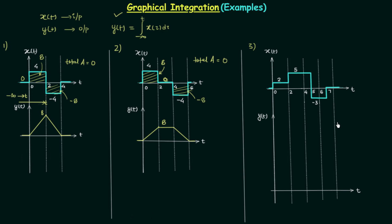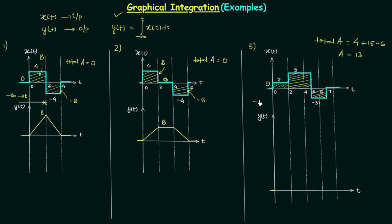For the third signal we follow the same steps. The total area equals the area of the first rectangle, 2 multiplied by 2 equals 4, plus the area of the bigger rectangle, 3 multiplied by 5 equals 15, minus the area of the last rectangle, 3 multiplied by 2 equals 6. Solving gives total area equal to 13, so integration continues with 13. From minus infinity to zero, xt is zero so yt is zero. At t equals two the area is 4.